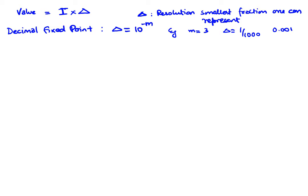If we have a scientific experiment that we are doing and we want a really high resolution, then we might set an m value of 5, where Delta is 0.00001. Now that's a decimal fixed point, but we can also have binary fixed point.